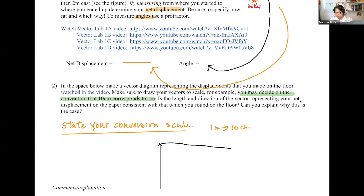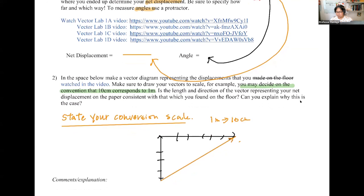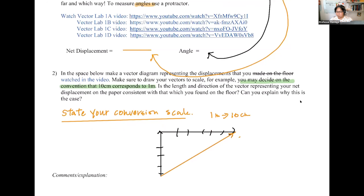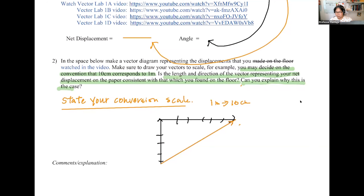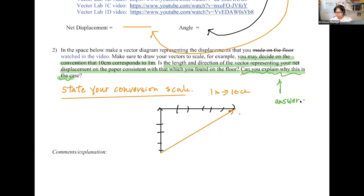It was 1.5 meters north and two meters to the east, and this has to be measured accurately. Then draw your displacement on your paper. That's number two. Also don't forget to explain why the length and direction of the vector on the paper is consistent with the one on the floor in the video. That's number two.